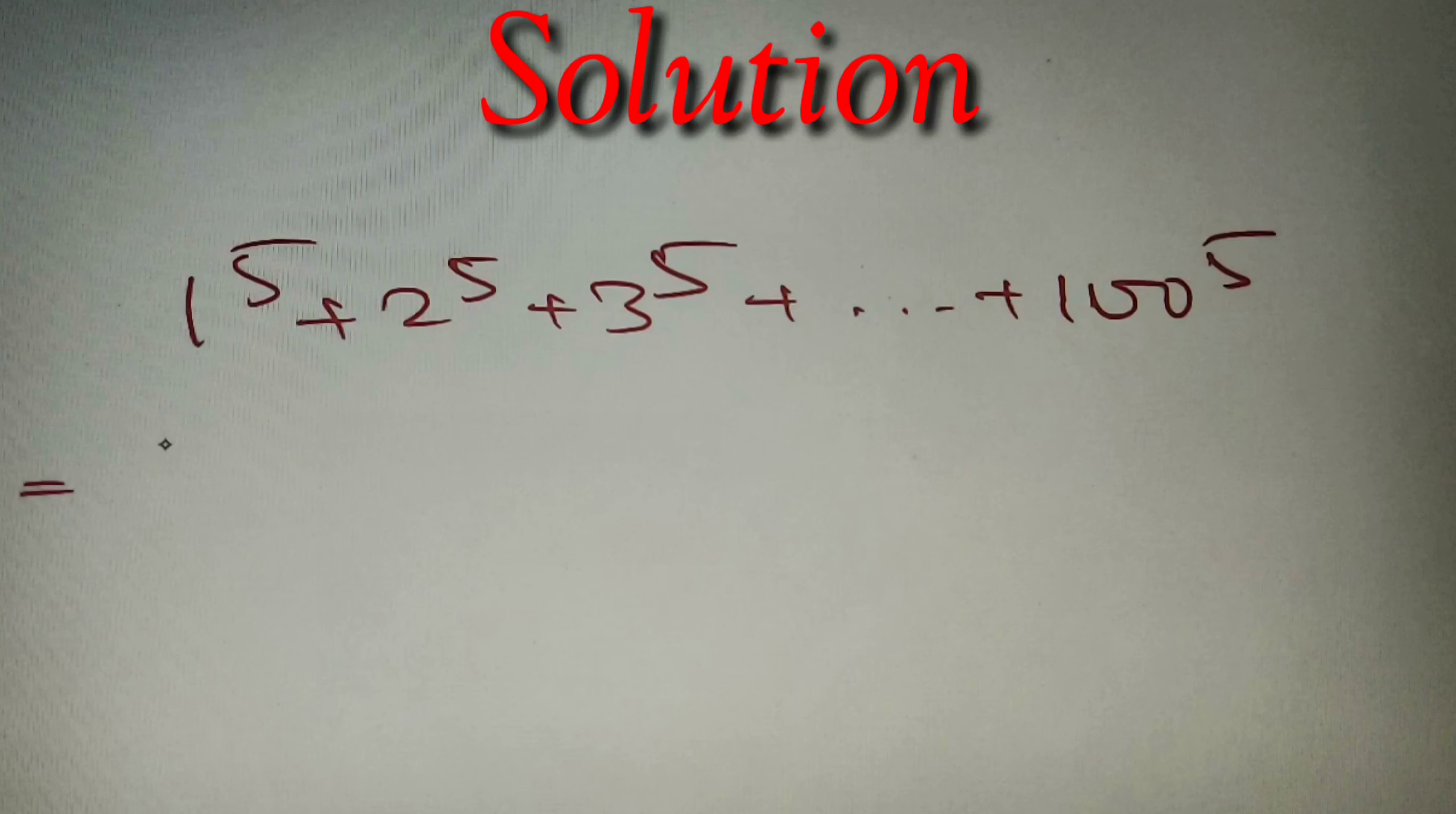We can say that the unit digit of 1 raised power 5 is 1, 2 raised power 5 is 2, 3 raised power 5 is 3, and it will go up to 10 raised power 5 which will give us 0.